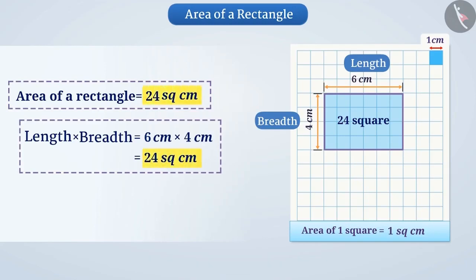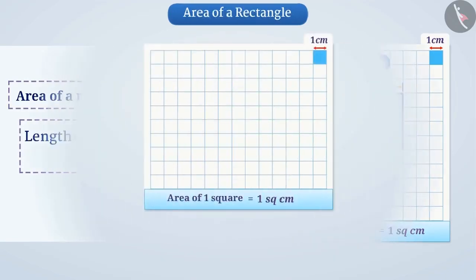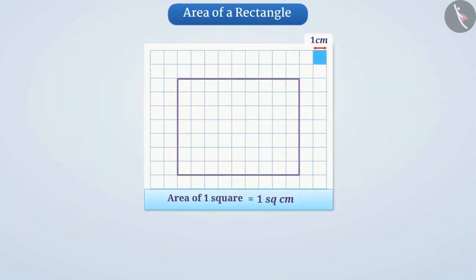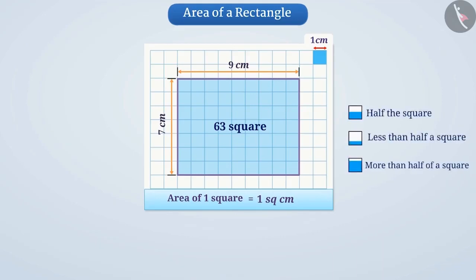Is this true for any rectangle? Let's find out. Look at this rectangle. Its length is 9 cm and breadth is 7 cm. Here, the total number of squares is 63. Here, none of the squares are half, less than half or more than half. Therefore, we can say that the area of this rectangle is 63 cm².